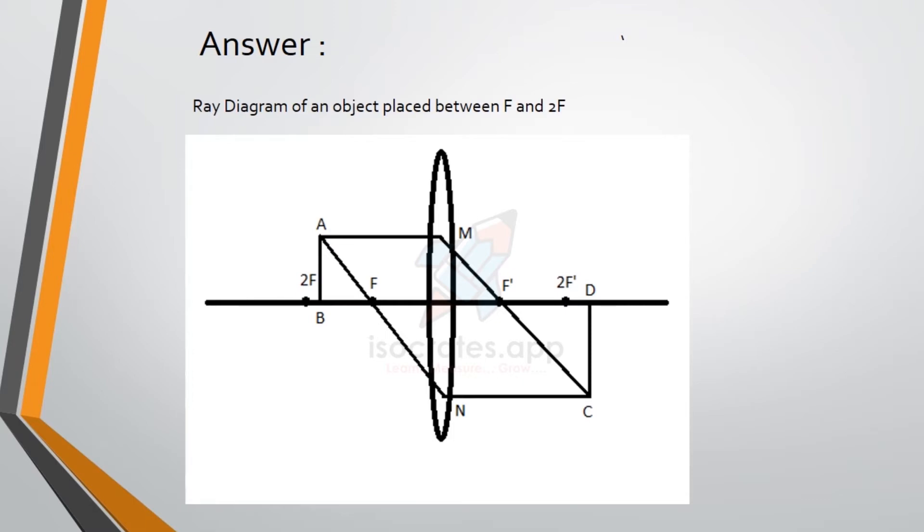and right-hand side. It is represented as F and 2F on the left-hand side, and F' and 2F' on the right-hand side. Then we have to draw the object AB.